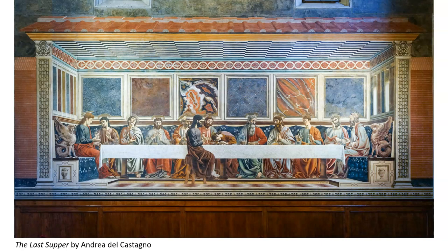For example, Andrea del Castagno separates Judas from Jesus and the rest of the apostles by putting him on the other side of the table. Castagno also depicts Judas with a sharp beard, which follows historical theming and images of Judas from the past. Leonardo also did not include any of the detailed and somewhat distracting architecture in his depiction when compared to Castagno's, and instead focused only on Jesus and his apostles.